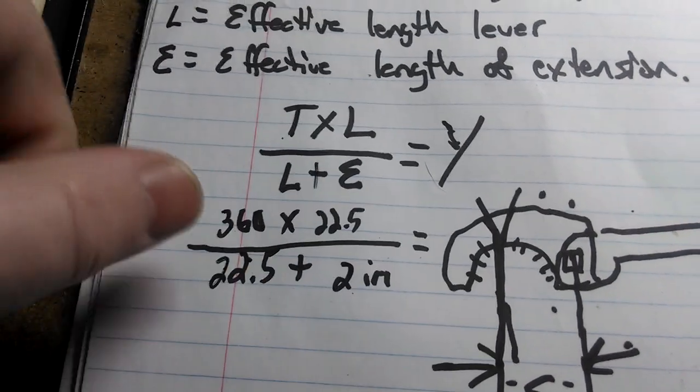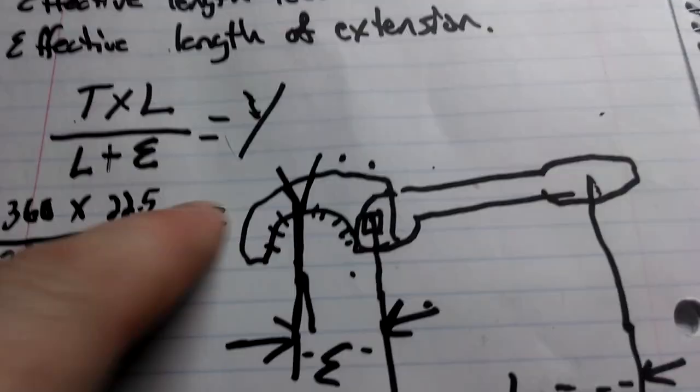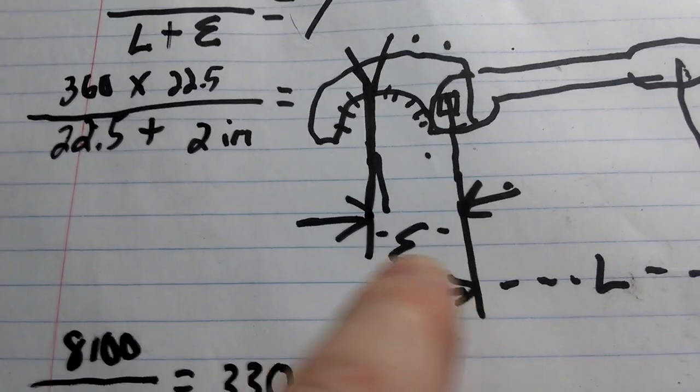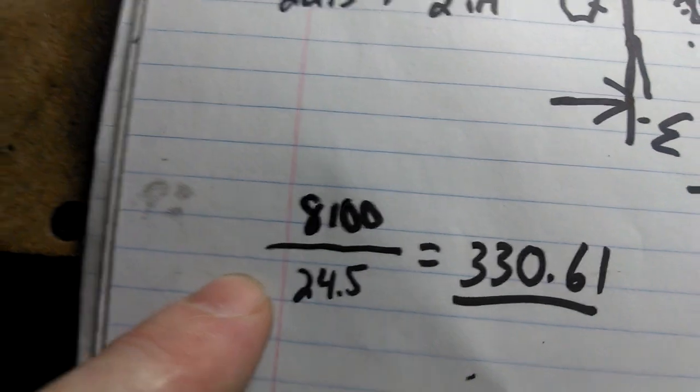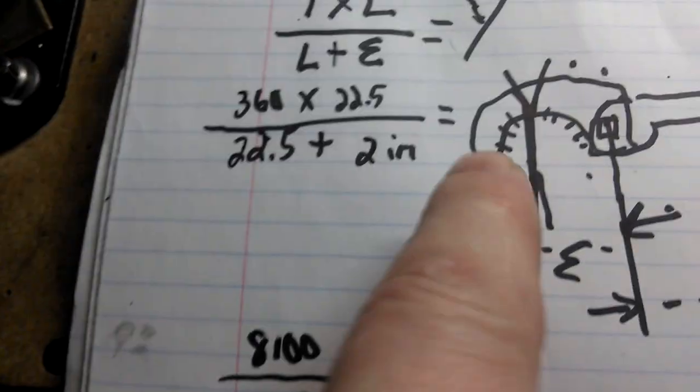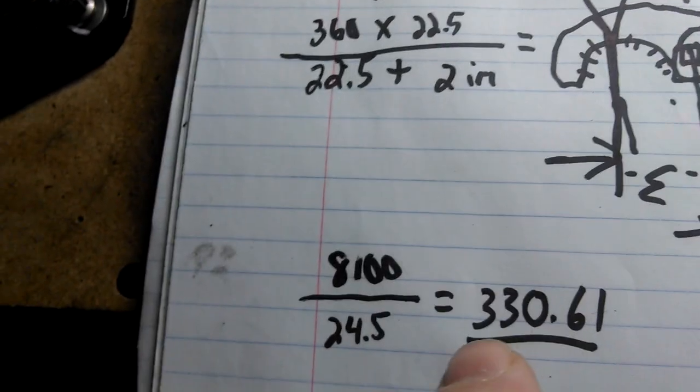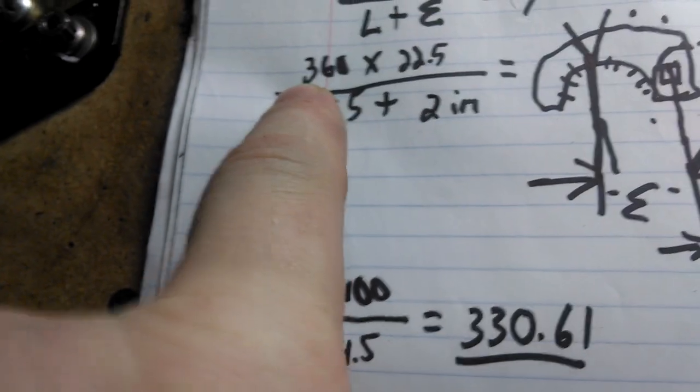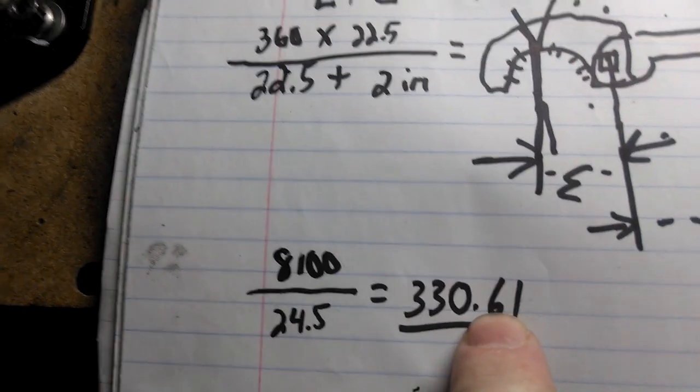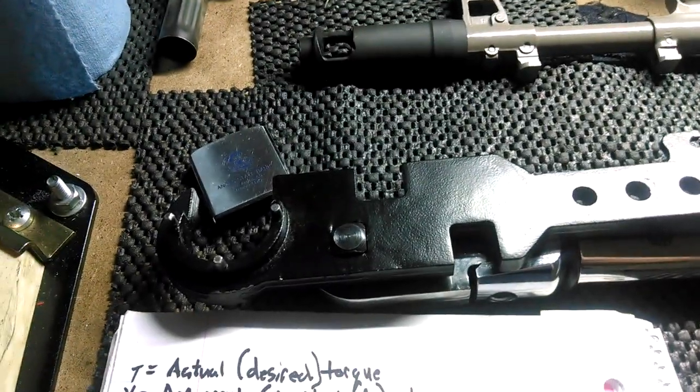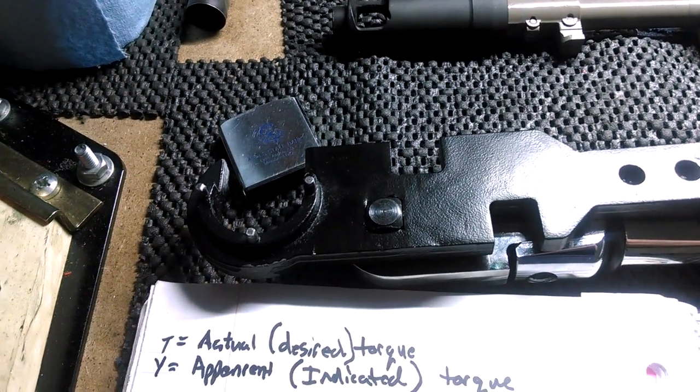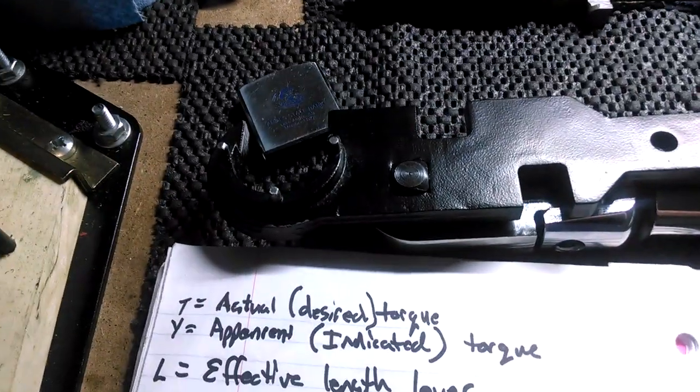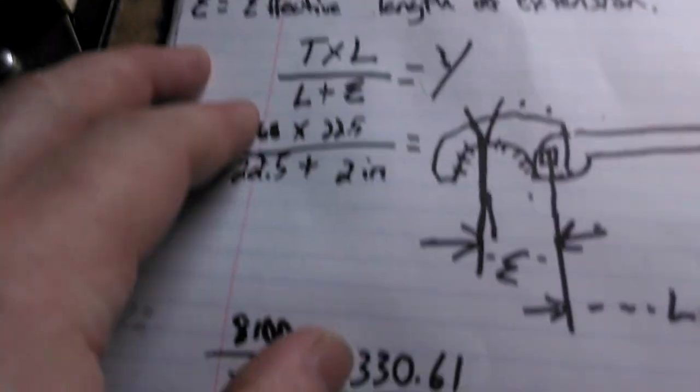So anyway, 30 foot-pounds is our desired torque times 22, which is our length of lever, divided by 22 and a half plus two, which is our length of extension. It comes out to this, which equals that. So if I want to apply 30 foot-pounds to my barrel nut, or 360 inch-pounds to my barrel nut, I set this torque wrench to 330 inch-pounds. And when I use this torque wrench, I will actually apply 360 inch-pounds, 30 foot-pounds. So I need to dial my torque wrench down 30 inch-pounds when I'm using this particular setup.